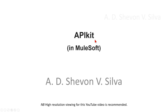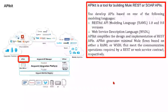API kit in MuleSoft. API kit is a tool for building Mule REST or SOAP APIs. You develop APIs based on one of the following modeling languages: RESTful API Modeling Language RAML 1.0 and 0.8 versions, or Web Services Description Language WSDL. API kit simplifies the design and implementation of REST APIs. API kit generates minimal Mule flows based on either RAML or WSDL that meet the communication operations required by a REST or web service contract respectively.